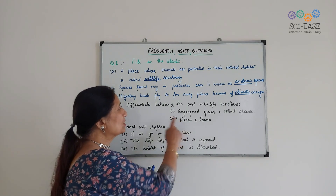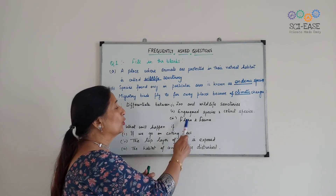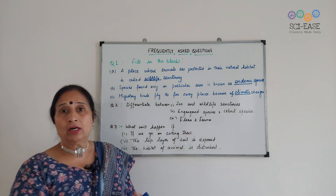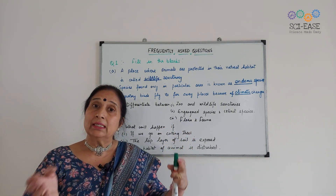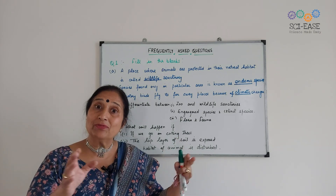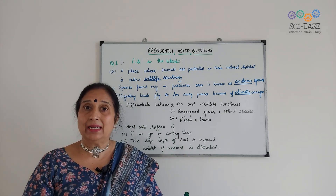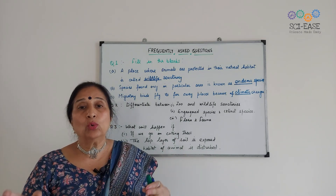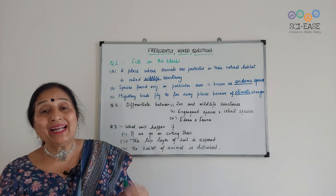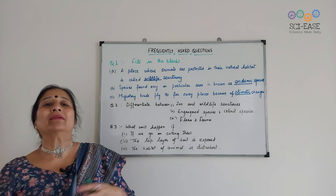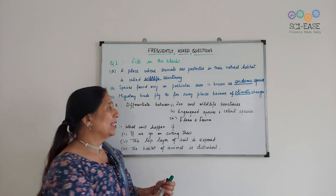Next one is flora and fauna. What is flora? The plants of a particular area are known as flora, and the animals of a particular area are known as fauna.